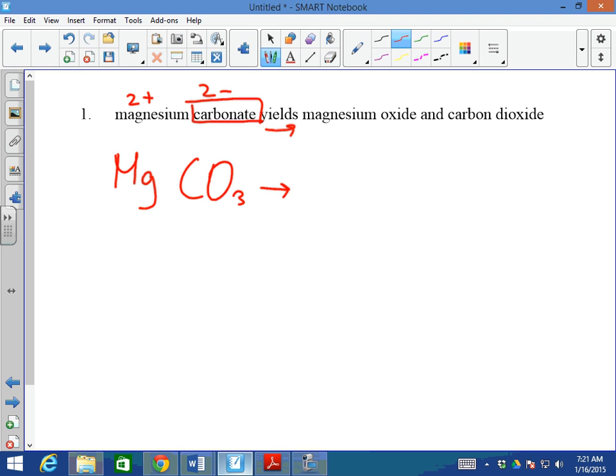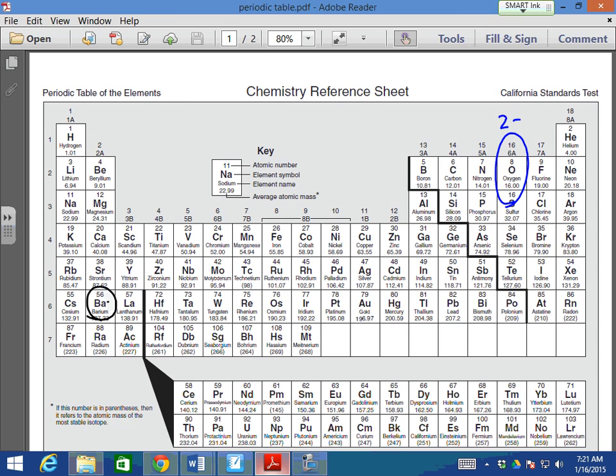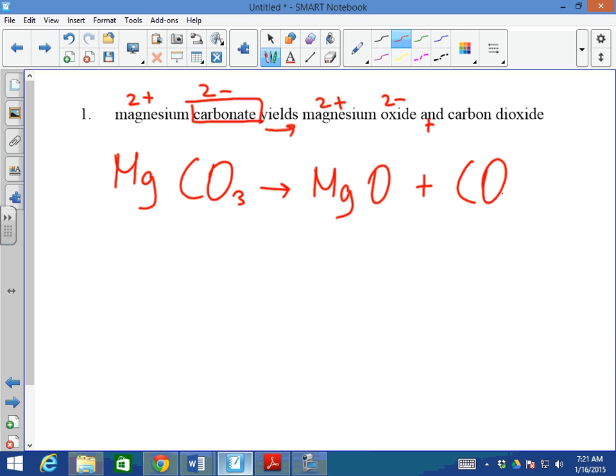Yields is the arrow. Magnesium, we said it's 2. And oxygen, if I go to my chart, I consider that oxygen is in group 16, charge of negative 2. Magnesium oxide. They're both 2s. They cancel out. Plus, which is and, carbon dioxide, carbon compound.